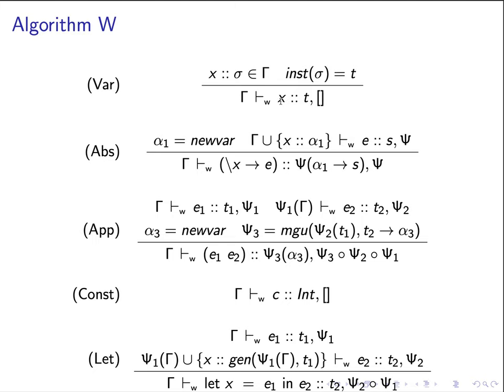Given the program is a variable, we would like to look it up in the type environment gamma. Let's say we find this type annotation is sigma — potentially a type scheme, so it might be polymorphic. We then apply the inst function to it to make it less polymorphic, and hopefully we produce a simple type t. We output t as the inferred type and leave an identity or empty type substitution as the result.